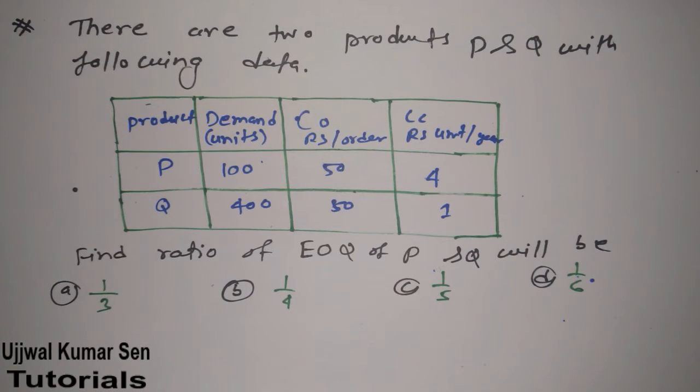So what they have asked: find ratio of EOQ of P and Q. So what they have said in this question - they have given data for two products,